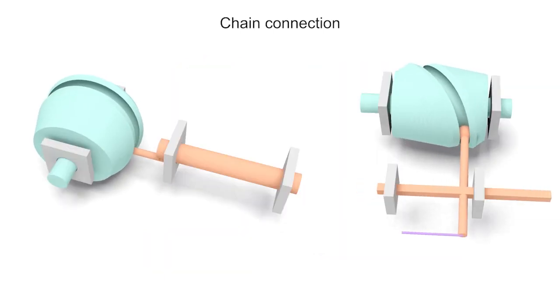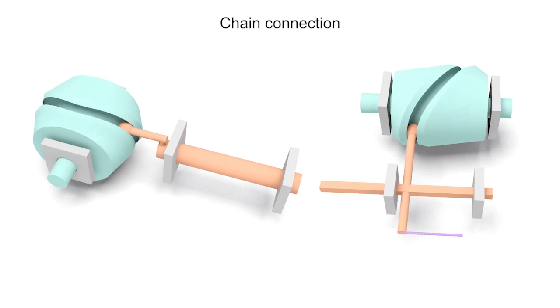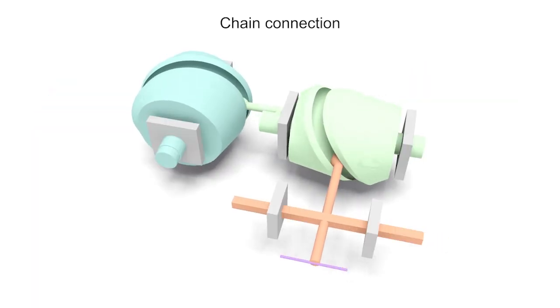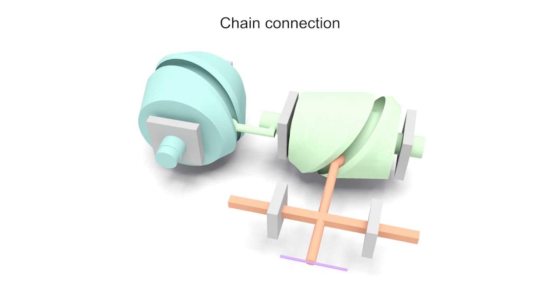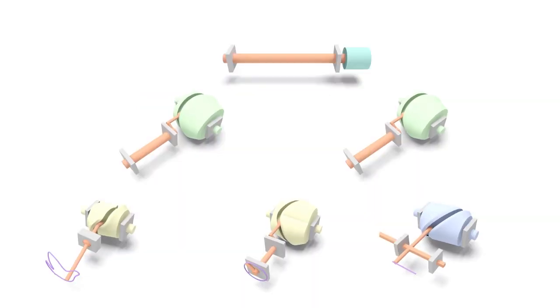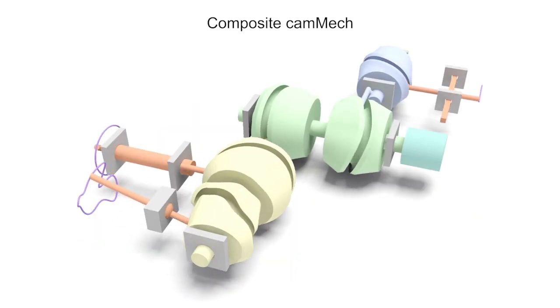A pair of cam mechs also can be connected to form a motion transfer chain for adjusting the output motion's pose relative to the driving cam. Given multiple cam mechs, we connect them following a tree structure to form a working mechanism called composite cam mech.